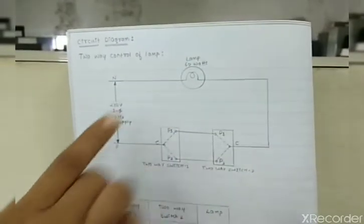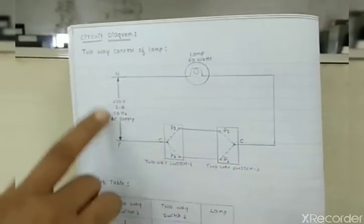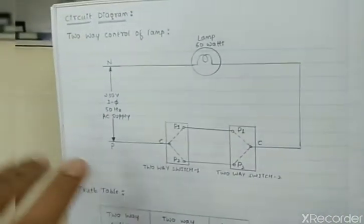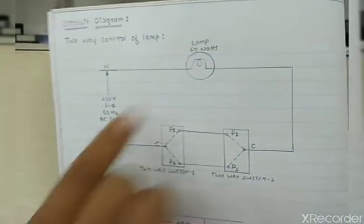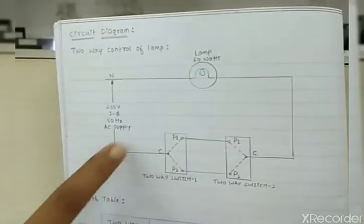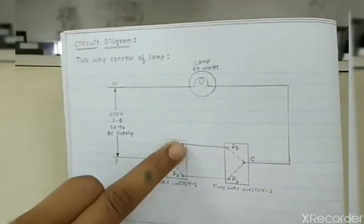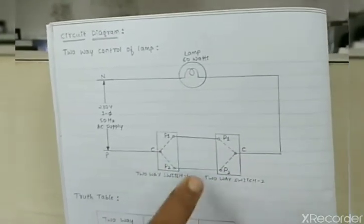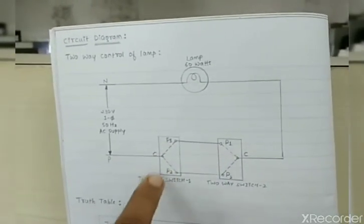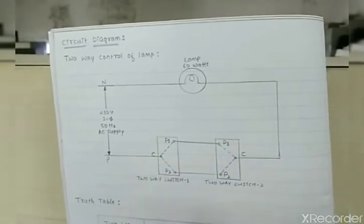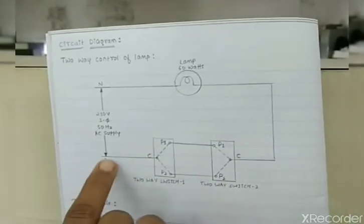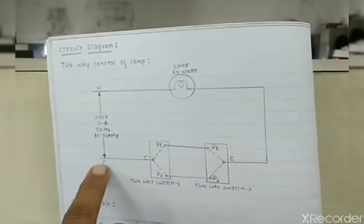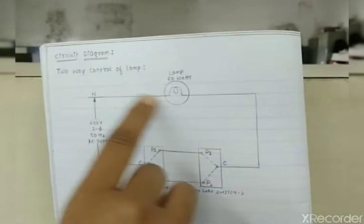Be careful about this circuit diagram. We have a phase and a neutral. We are going to supply 230 volt, single phase, 50 hertz AC supply. The lamp is connected through a switch — it is a two-way switch. There are two switches we are going to use, and these are not normal switches; these are two-way switches, as we have already explained in the theory.